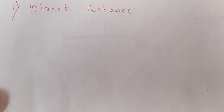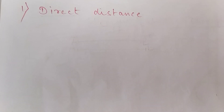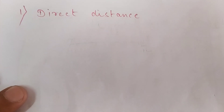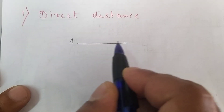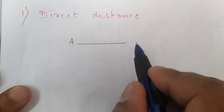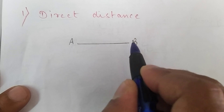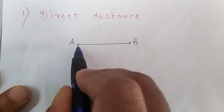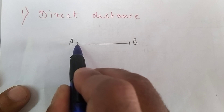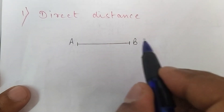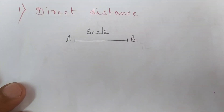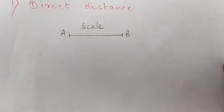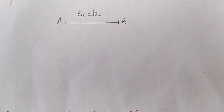Direct distance is measured directly with the help of a scale. For example, point A is village A and point B is village B. From A to B we can directly measure with the scale, and that will be called direct distance.